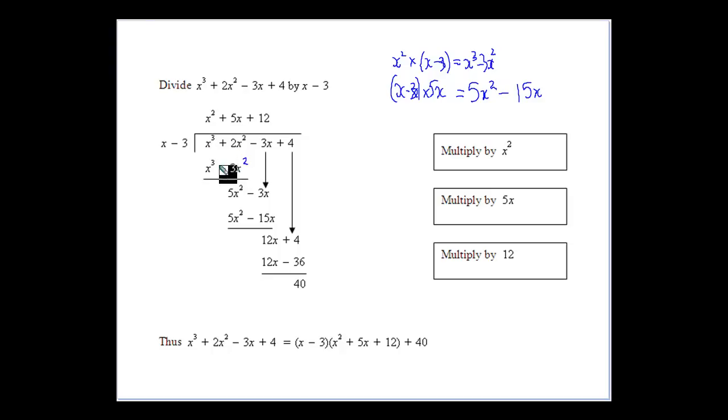And then we're going to do our subtraction here. So the x cubed cancel. x squared minus minus 3x squared. So remember, we're subtracting minus 3x squared, it's going to give us a positive. So we've got to be really careful with that.